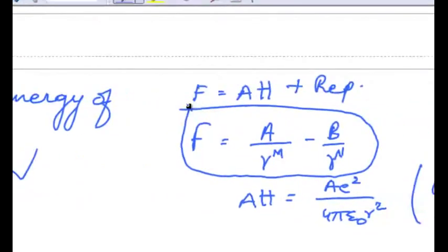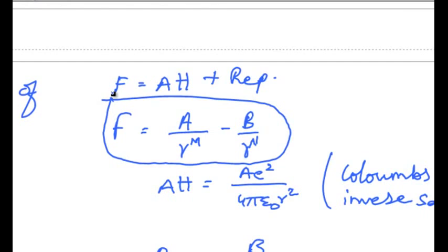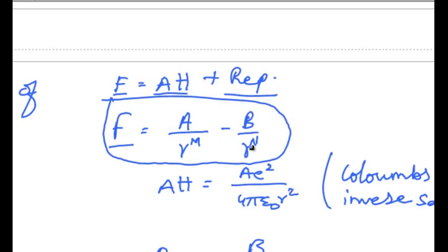The resultant force of an atomic system can be given as F is equal to attractive force plus the repulsive force. The general equation of force of an interatomic system can be given as F is equal to a by r power m minus b by r power n, where a by r power m represents the attractive force and b by r power n represents the repulsive force.